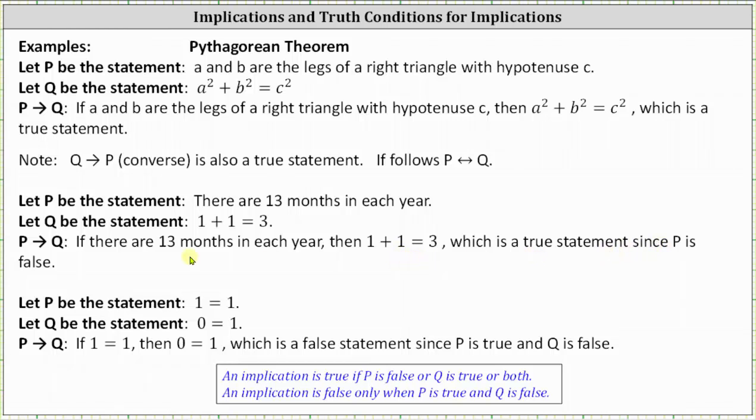Remember, the only way an implication is false is if P is true and Q is false. For our third example, let P be the statement: 1 = 1, and let Q be the statement: 0 = 1. The implication P then Q is: if 1 = 1, then 0 = 1. This statement is false because P is true and Q is false.